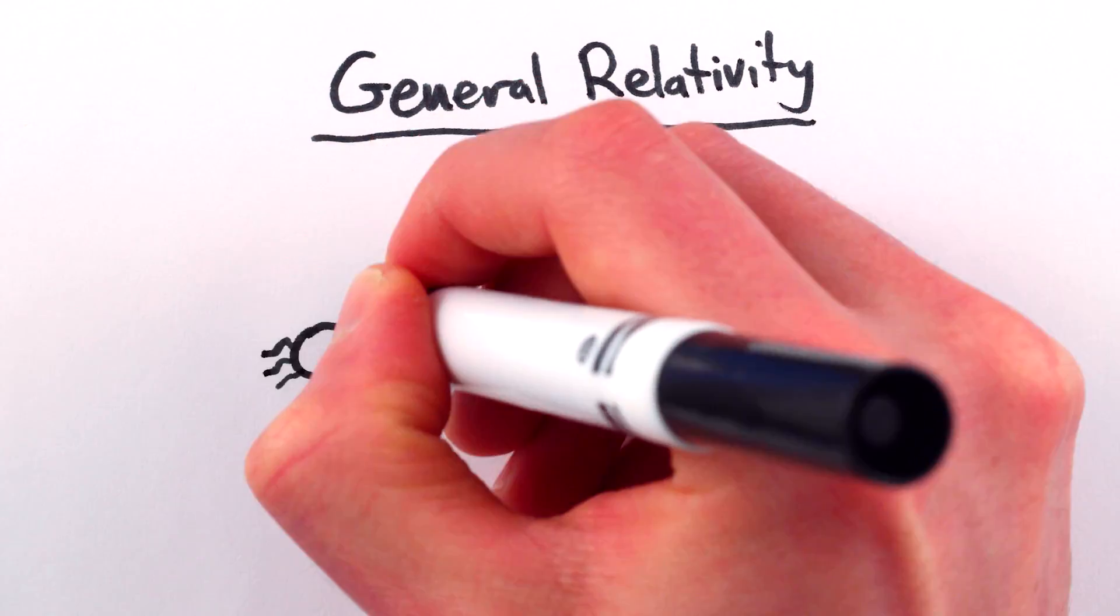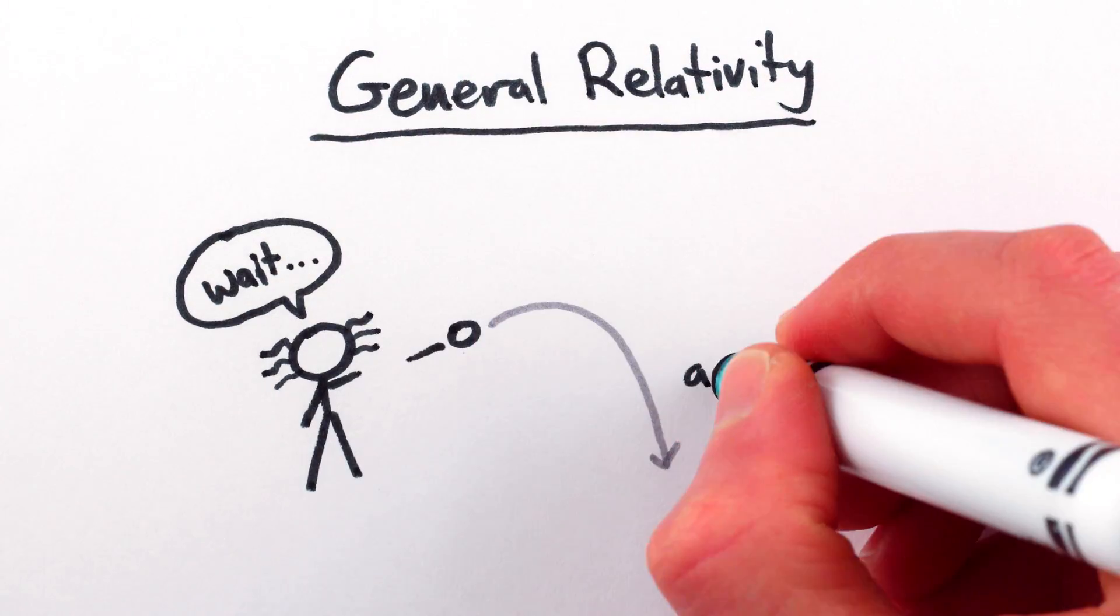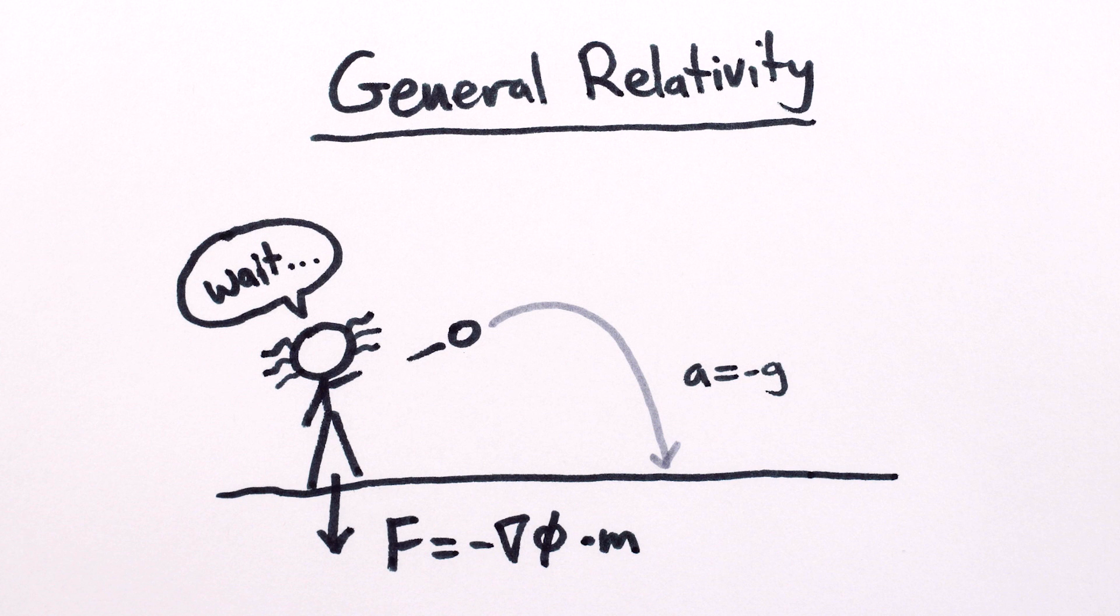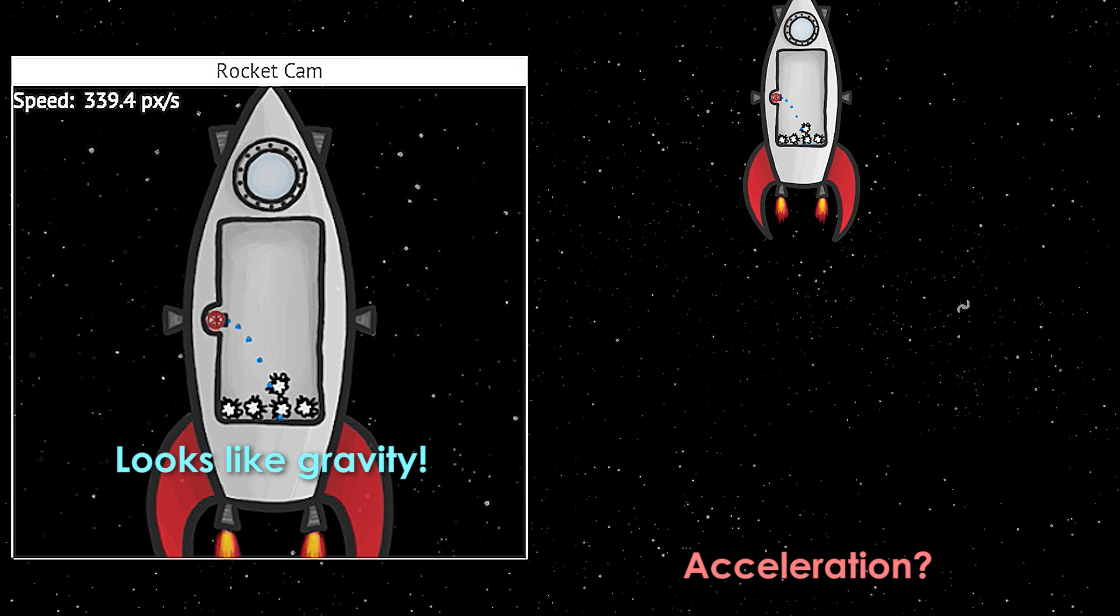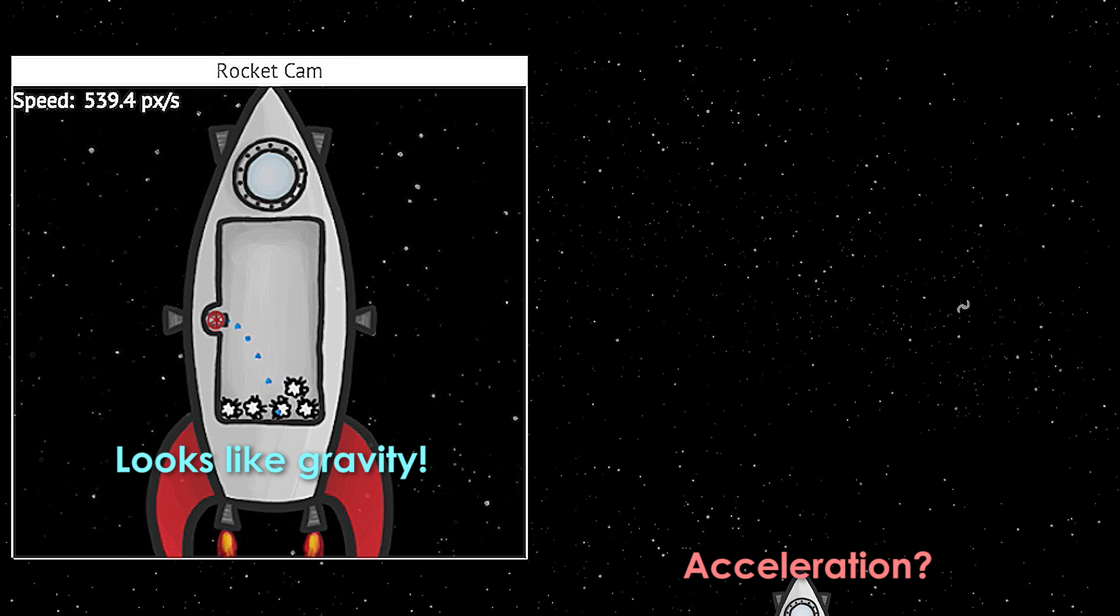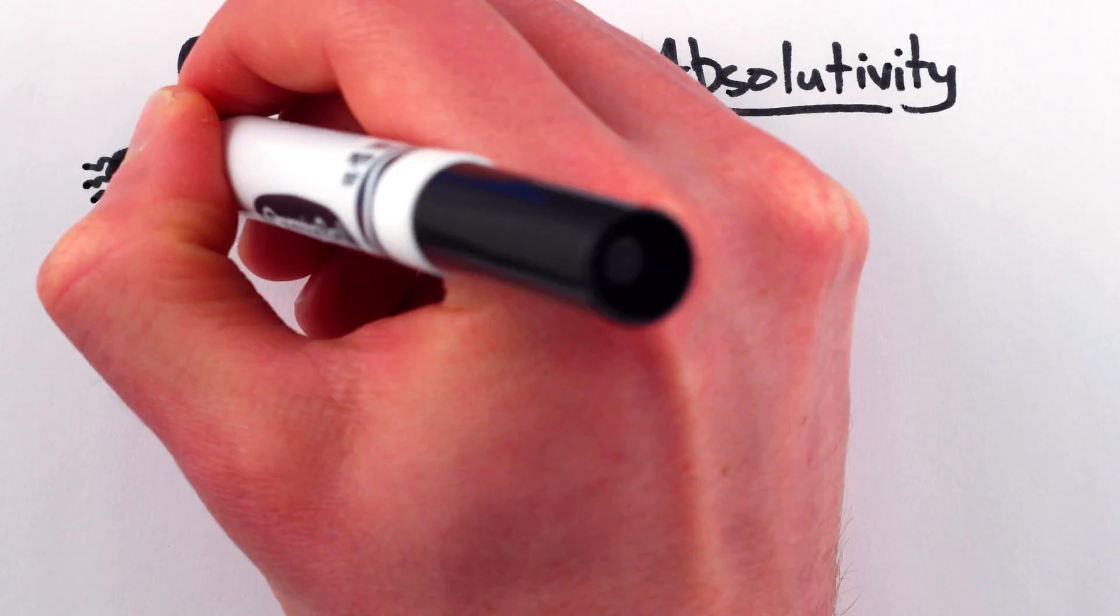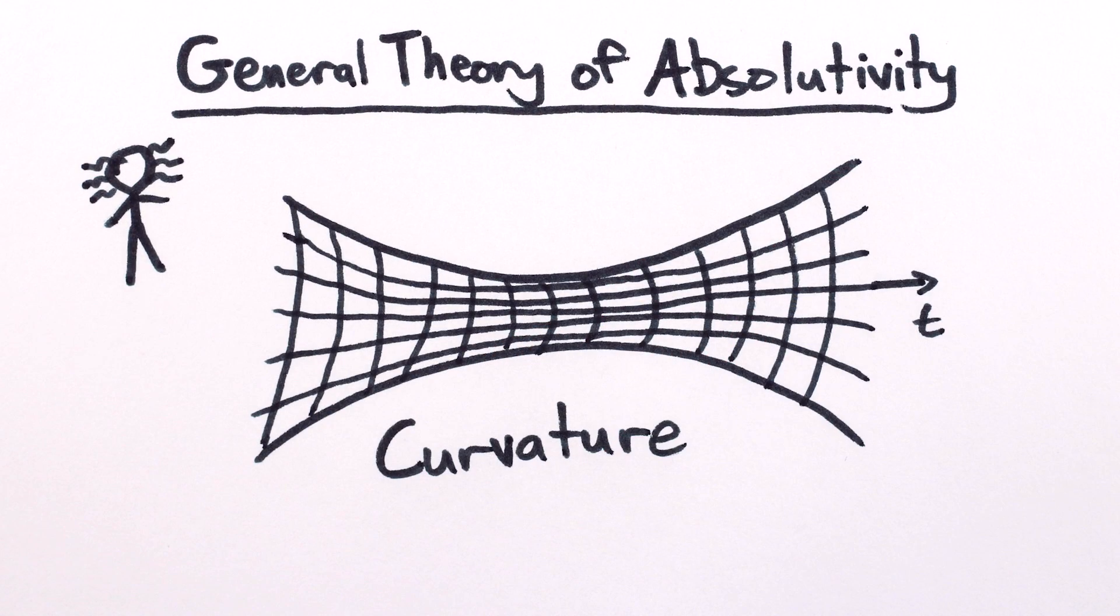Similarly, the general theory of relativity was essentially the recognition that in fact neither the acceleration nor the gravitational field experienced by an object are absolute quantities. Accelerations can transform into gravitational fields, and vice versa, depending on your perspective and the path you take through space-time. The more fundamental absolute quantity is the curvature of space-time, which you can think of as a kind of underlying or absolute gravity.